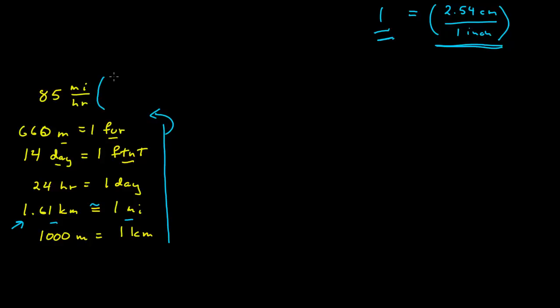so now I can change each of these relationships into ratios and multiply by my original expression. So I have here 1.61 kilometers per mile to be able to cancel the miles. And then 1,000 meters per kilometer to cancel the kilometers. And then 1 furlong is 660 meters to cancel the meters. And I'll be left over with my furlongs.